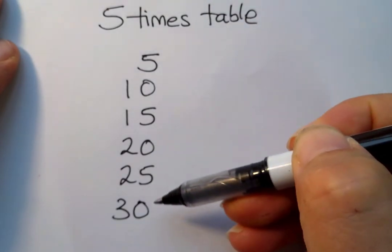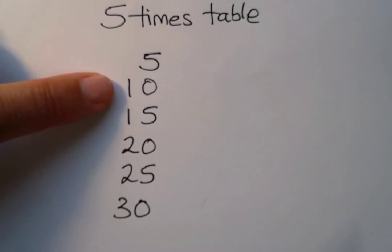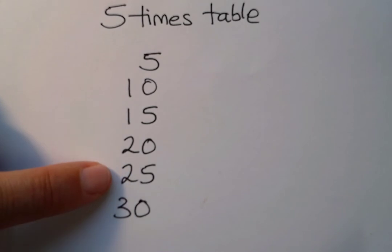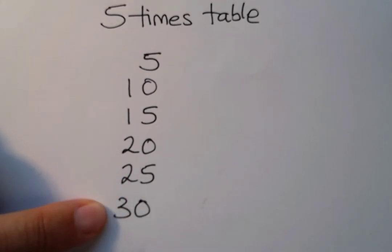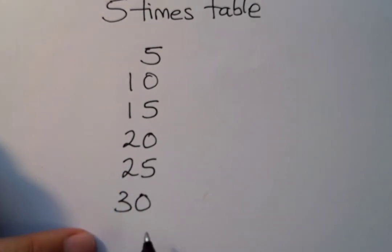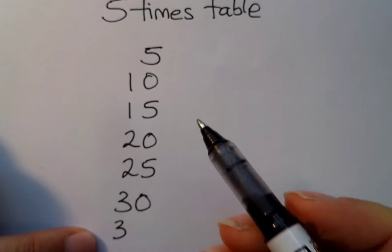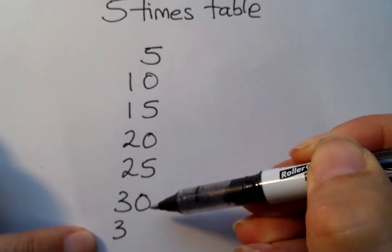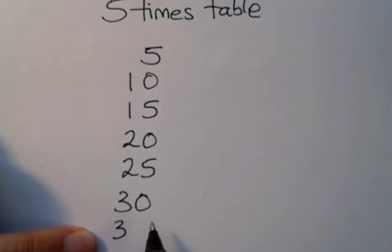They go in a pattern. Can you see on this side the tens digit also goes in the pattern one, one, two, two, three — and the next number will be a three. It goes five, zero, five, zero, five, zero, so the next ones digit will be a five, meaning the next answer is 35.